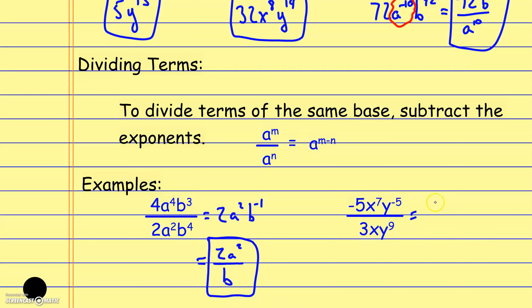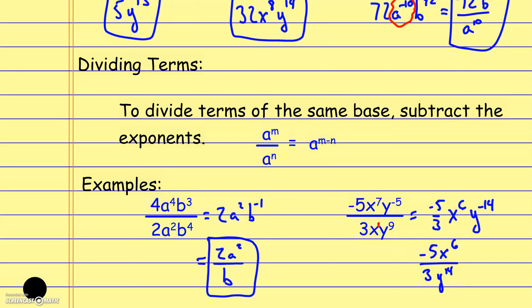Here we divide to get negative 5 thirds as the coefficient. Subtracting exponents for x gives x to the sixth, since the denominator has x to the first. For y, it's a negative 5 minus 9, which gives negative 14. So the negative 5 and x to the sixth stay in the numerator, while the 3 stays in the denominator and y to the 14th is sent down as a positive exponent.